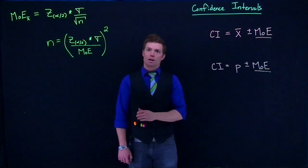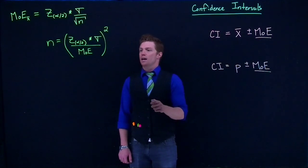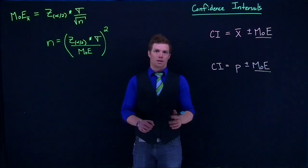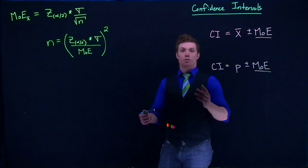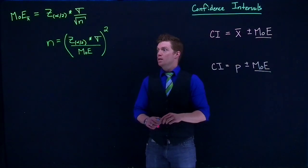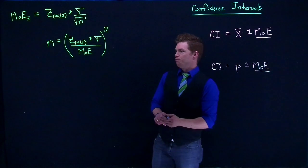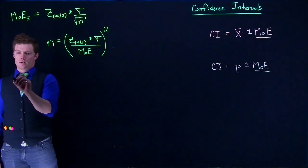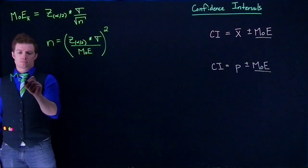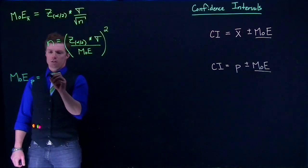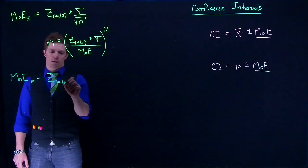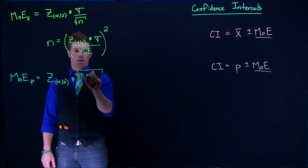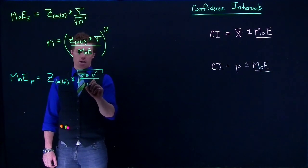If we are looking at proportions, we have some extra tools. We don't need to know the population standard deviation, so we can say we want a minimum margin of error of plus or minus 3%, which is pretty typical in political polling, and we can know how big our sample size needs to be. The margin of error for P is z alpha divided by 2, multiplied by the square root of P times P-complement divided by N.